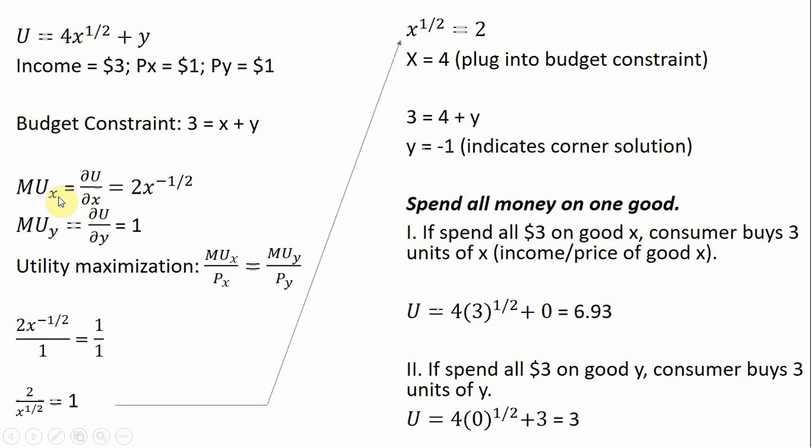To get the marginal utility of good X, we're going to take the partial derivative of the utility function with respect to good X, bringing the 1/2 down in front, 1/2 times 4 is 2. And then X raised to the 1/2 power minus 1 leaves us X raised to the minus 1/2 power.